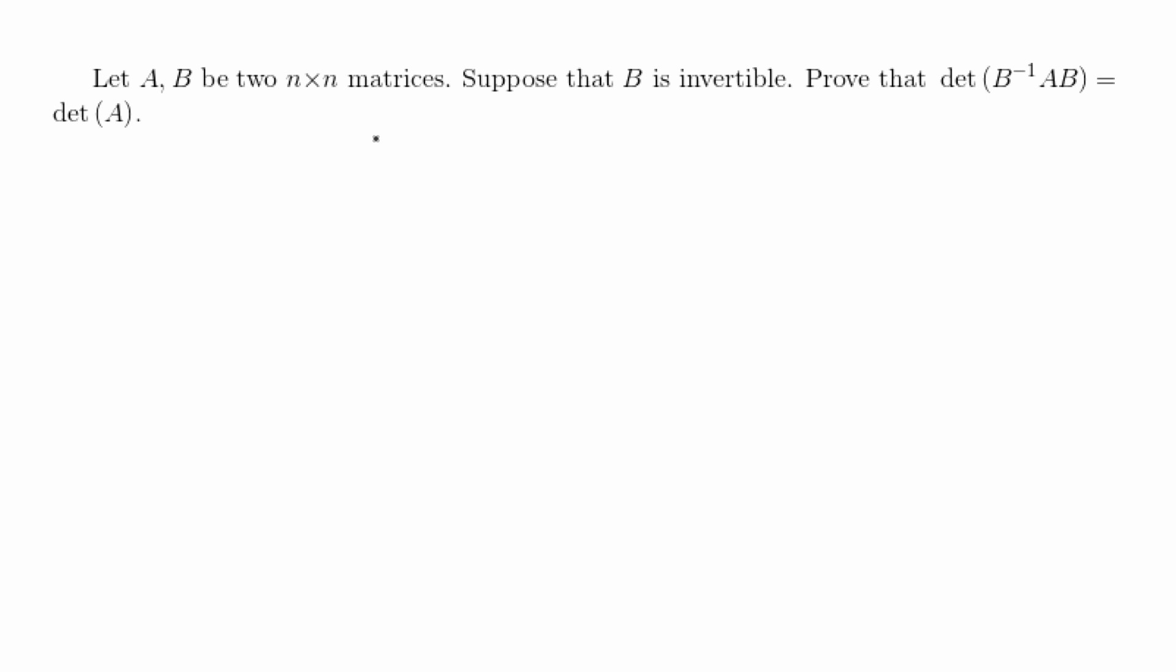Hey guys, in this video I'm going to go over this linear algebra proof. It says let A, B be two n by n matrices. Suppose that B is invertible. Prove that the determinant of B inverse times A times B is equal to the determinant of A.